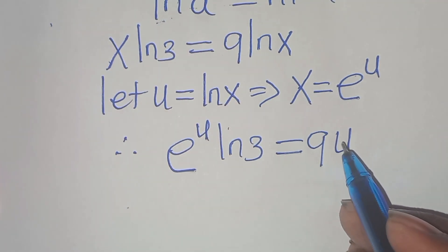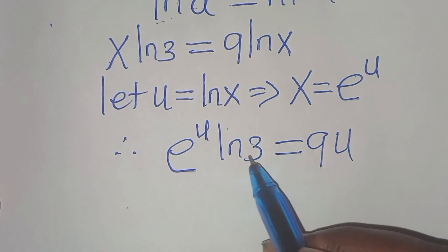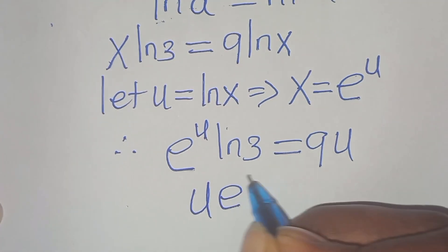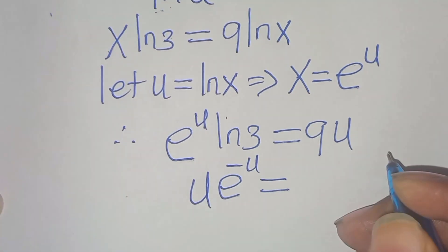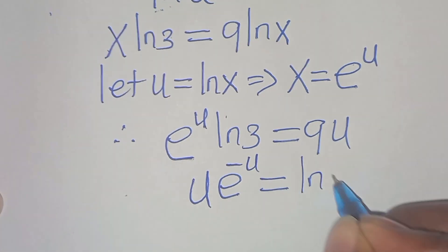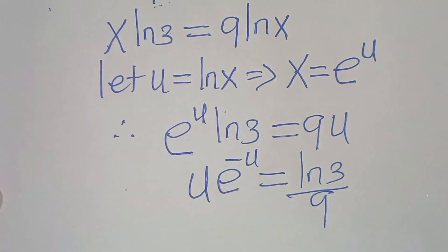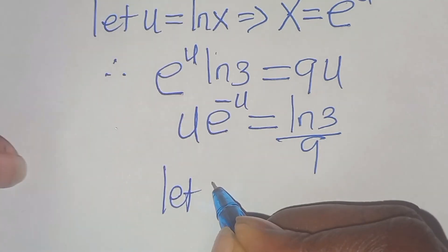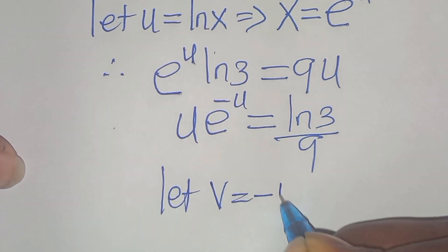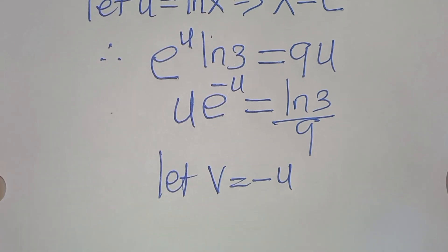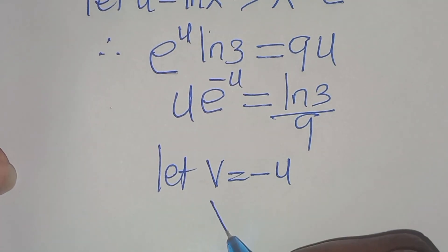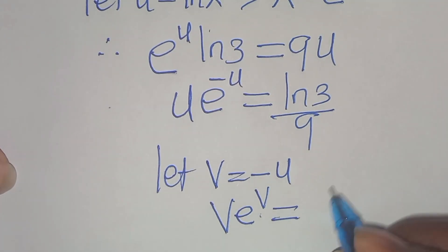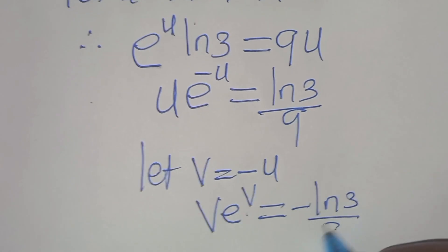The next step: we can express e to the power of u times ln(3) as u times e to the power of minus u, equal to ln(3) divided by 9. Then we have v multiplied by e to the power of v, equal to minus ln(3) divided by 9.